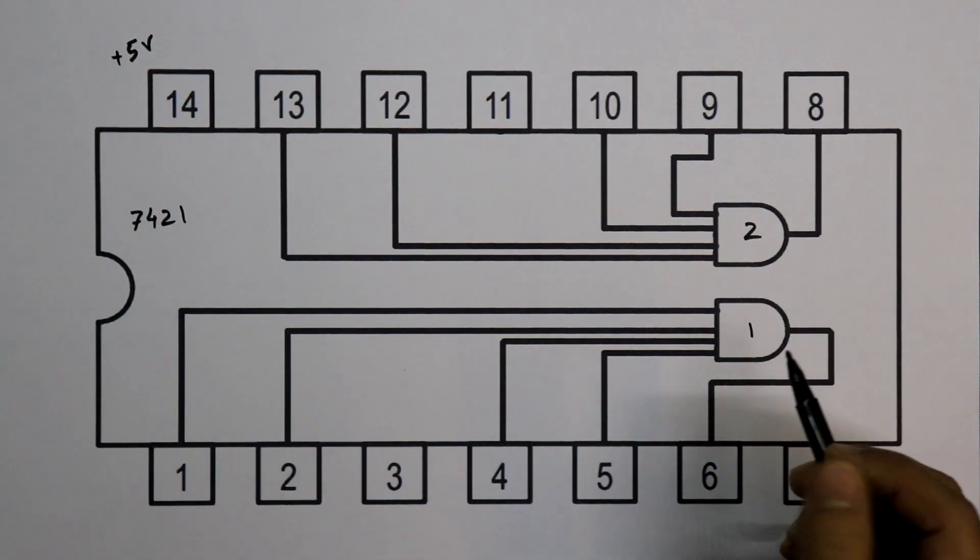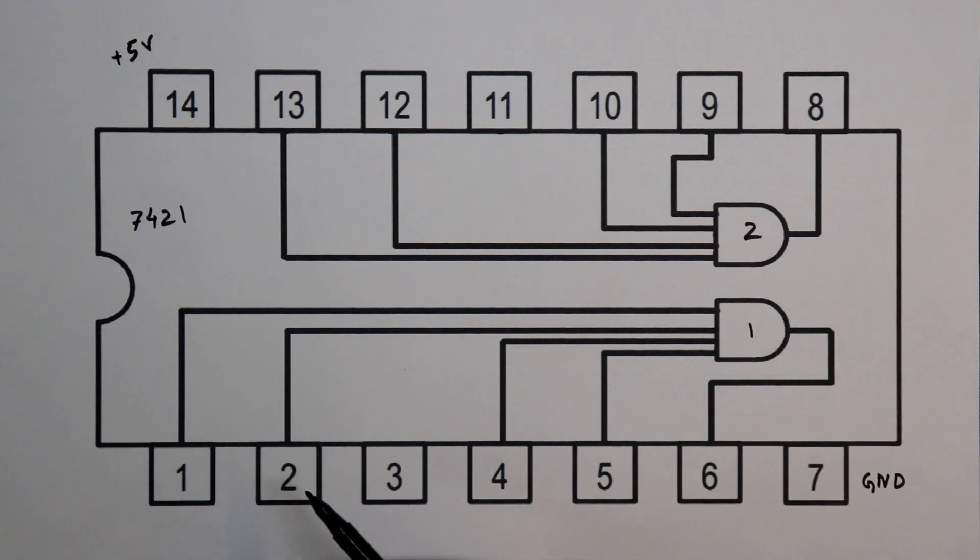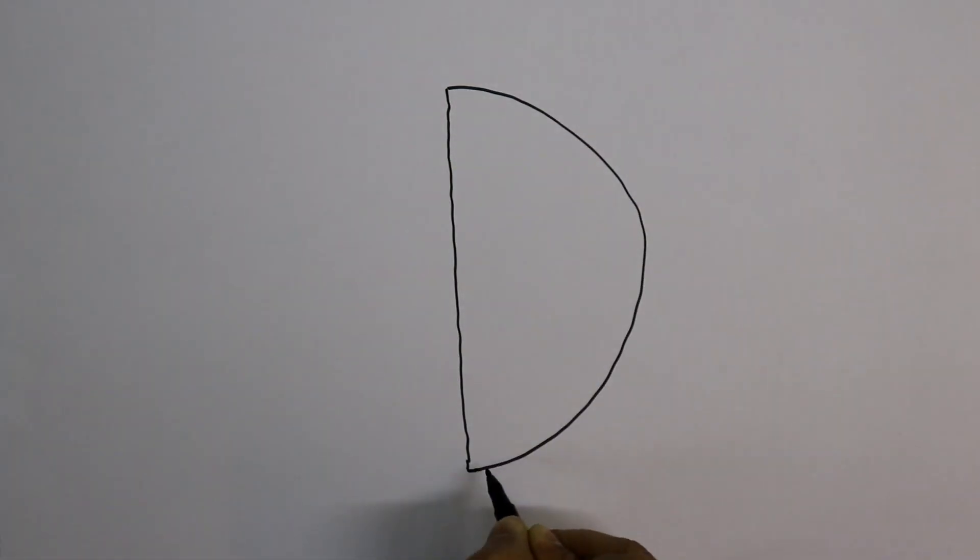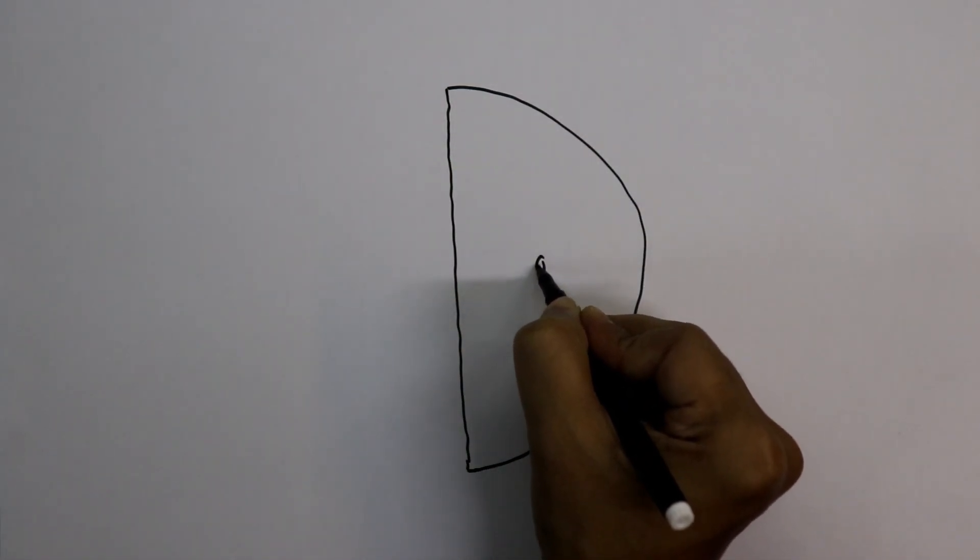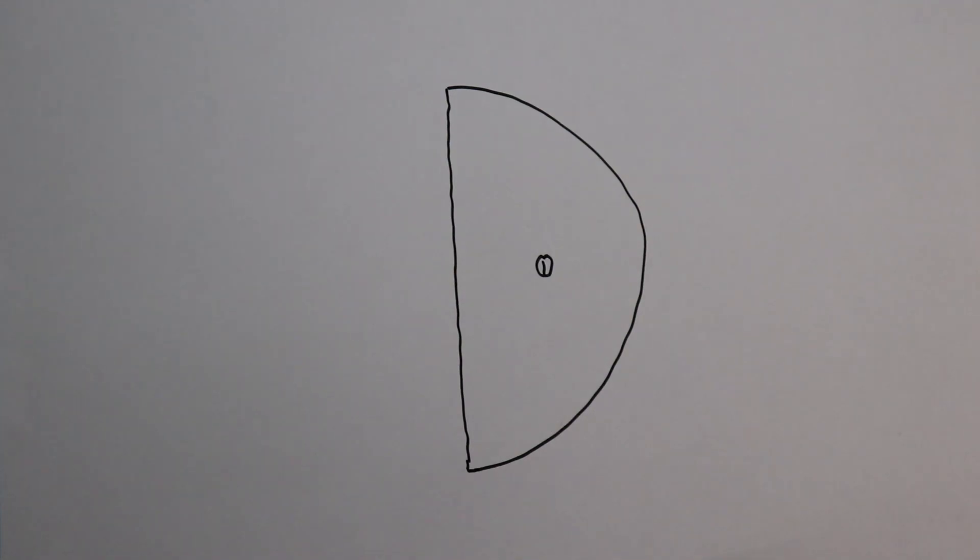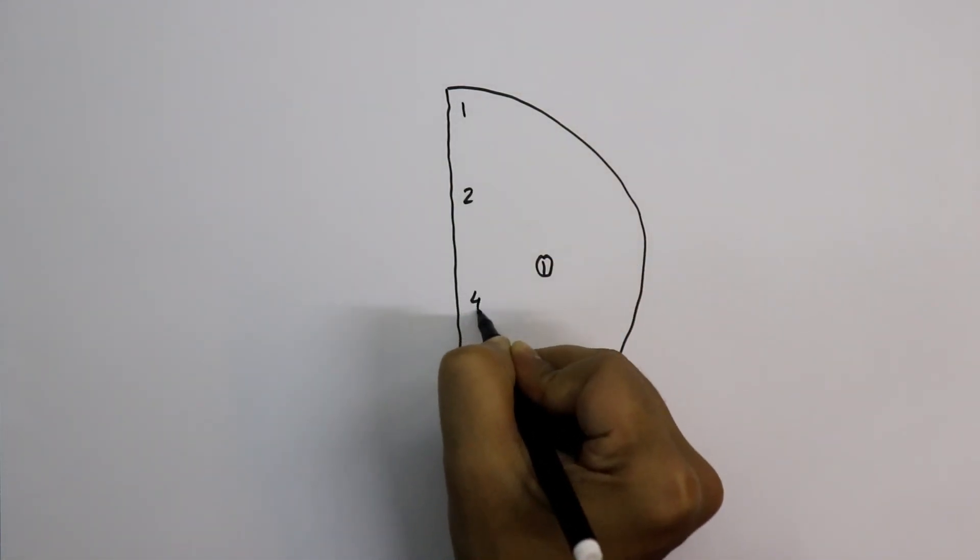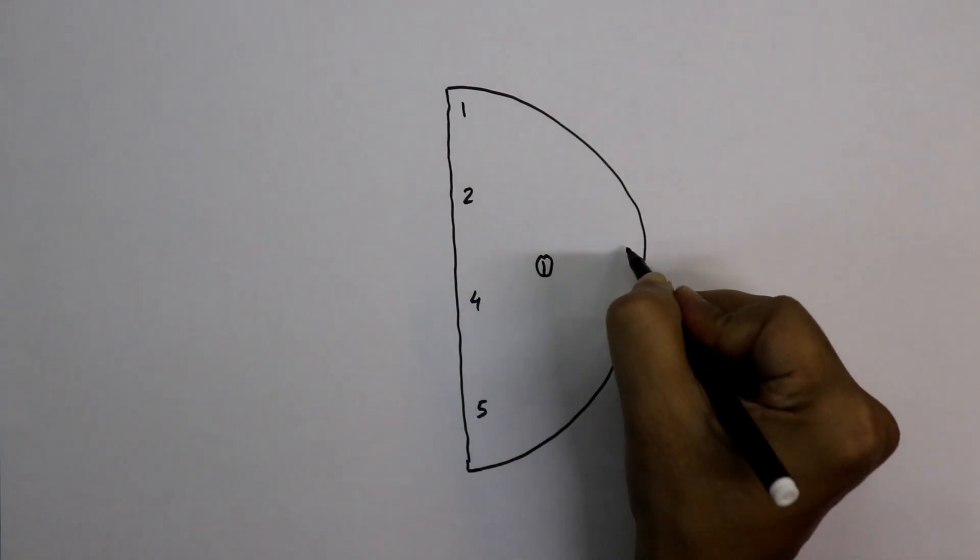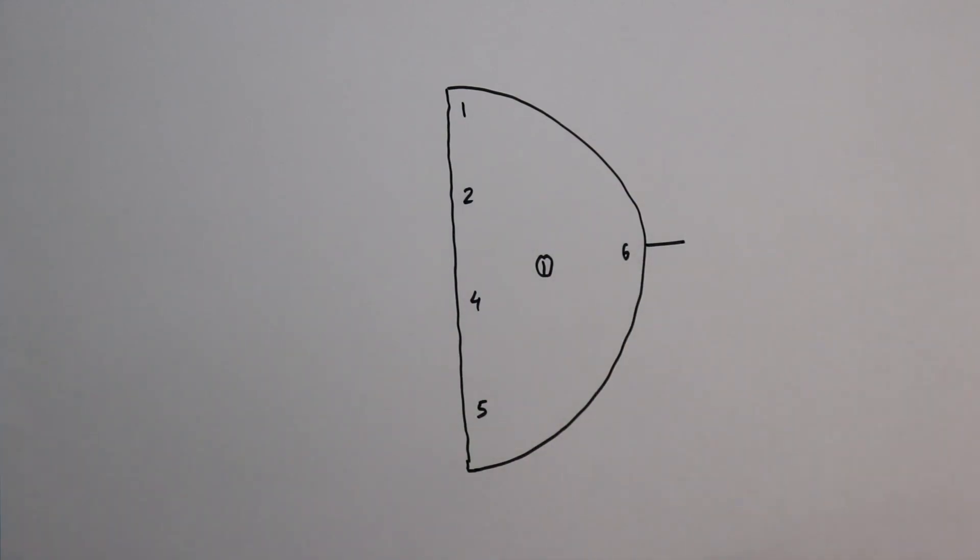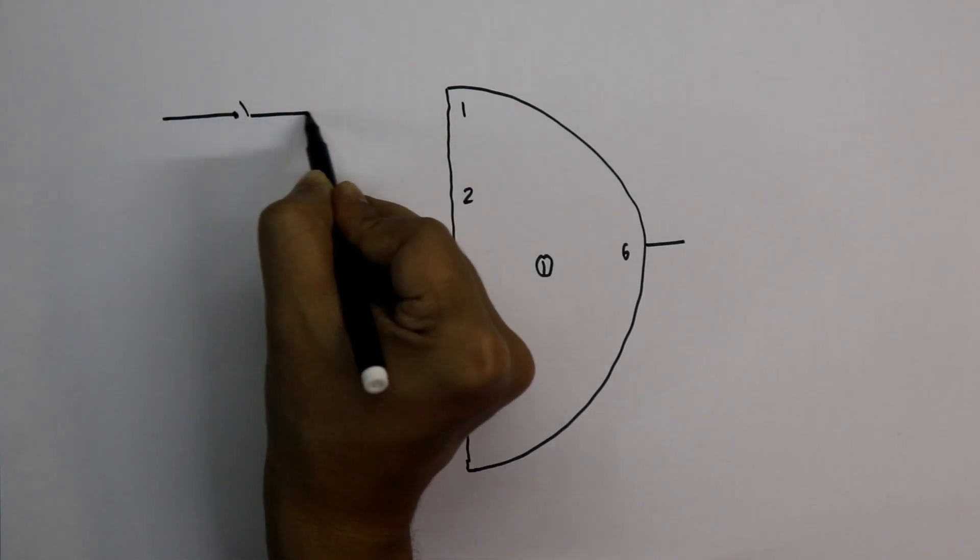For the practical I'll use gate number 1, that is pin number 1, 2, 4, 5 as input and pin number 6 as output. This is AND gate. As I'm using gate number 1, so the input pins will be pin number 1, 2, 4, and 5. The output pin is pin number 6. To provide input I'll use a switch.